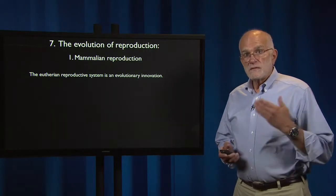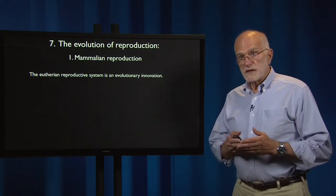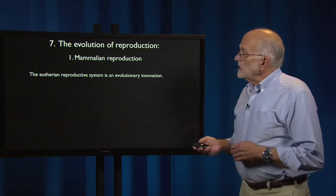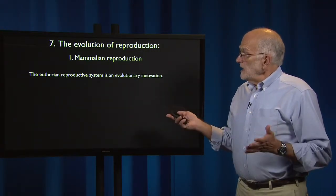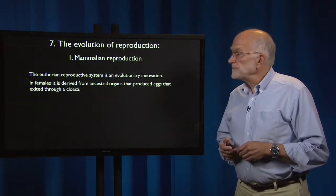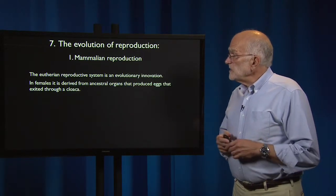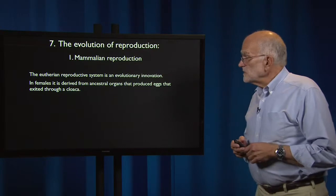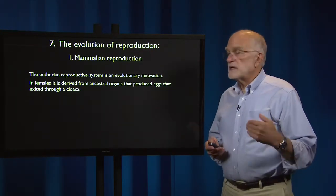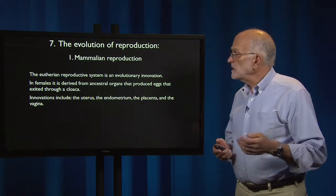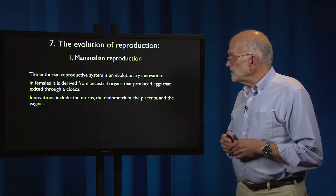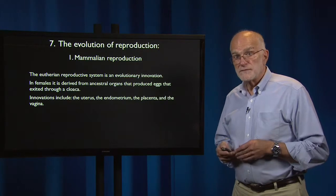The mammals that have a long gestation period with a well-developed placenta have a reproductive system that is an evolutionary innovation. In females, it's derived from ancestral organs that previously had produced eggs that exited through a cloaca. The innovations include the uterus, the endometrium, the placenta, and the vagina.